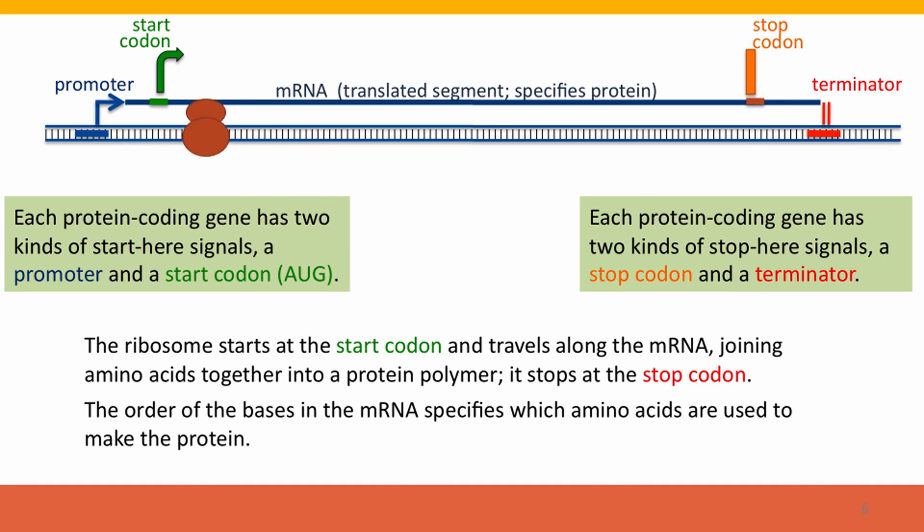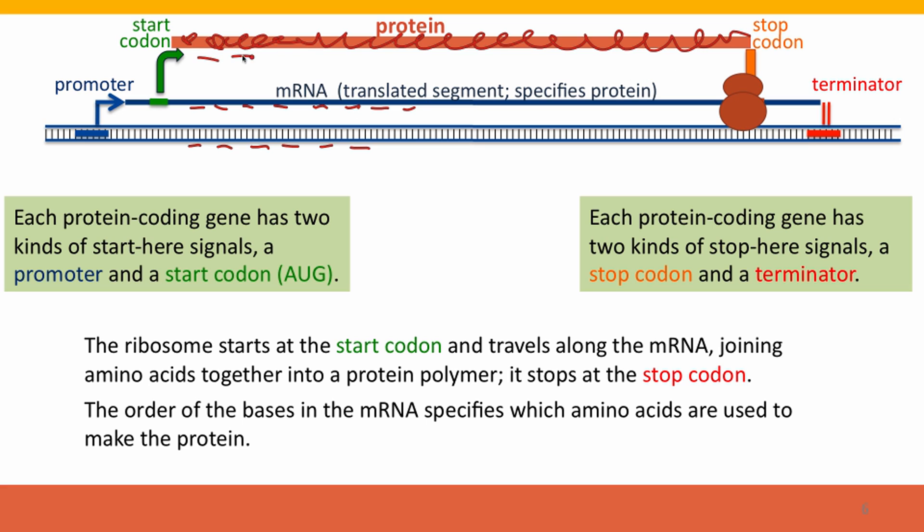So the ribosome binds to the start codon. It proceeds along the messenger RNA from its 5' end to its 3' end. And as it goes along, it synthesizes amino acids, assembles amino acids into the polymer of a protein. And it stops when it reaches the stop codon. The order of the bases within the DNA determines, of course, the order of the bases in the messenger RNA, and that determines the order of the amino acids in the protein. We'll talk about this in the next video.